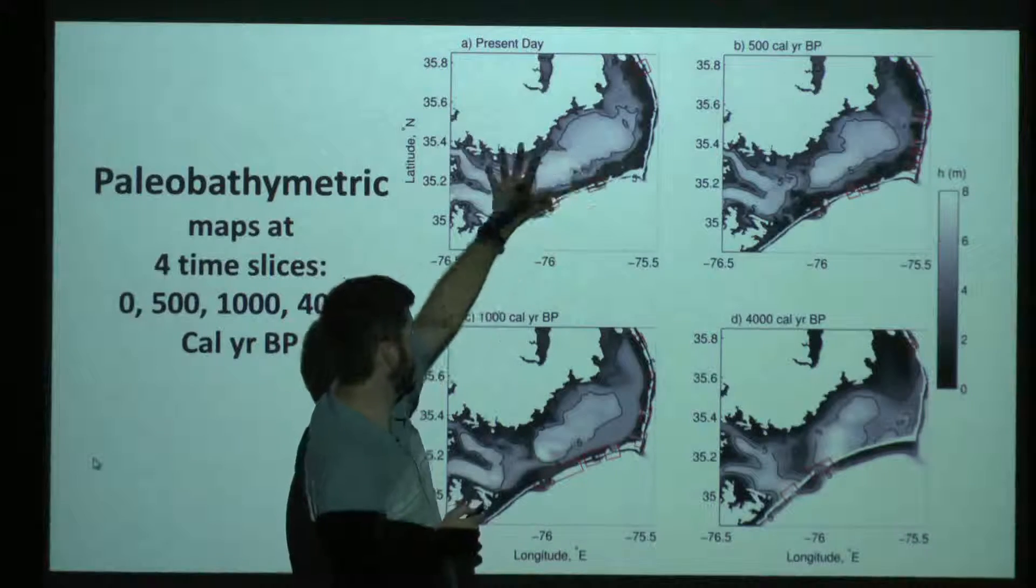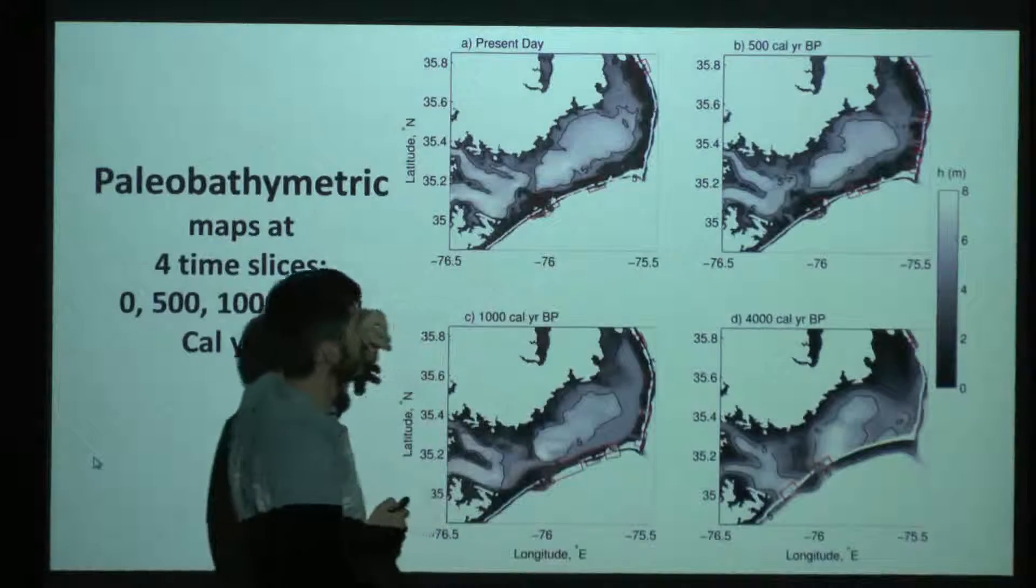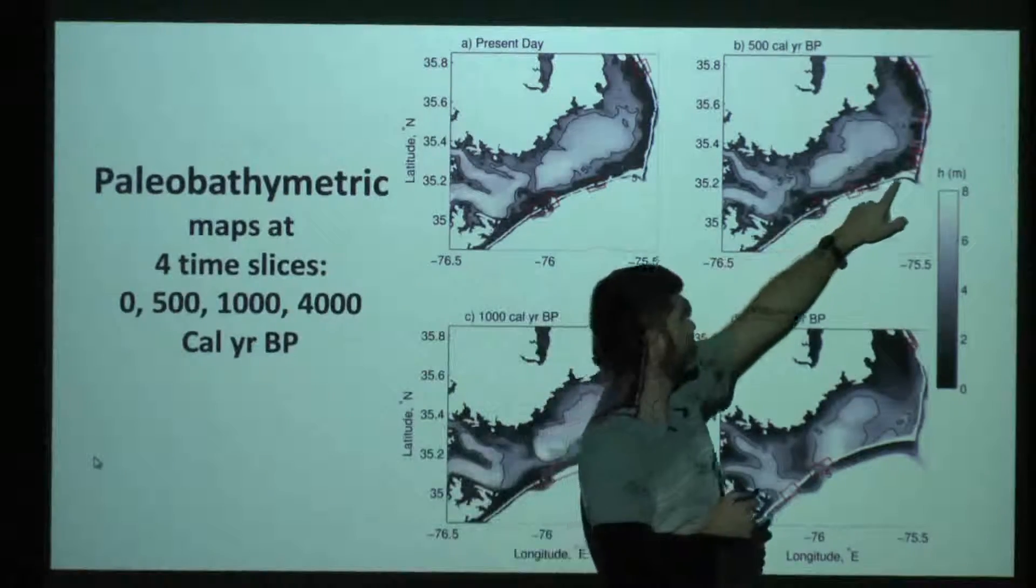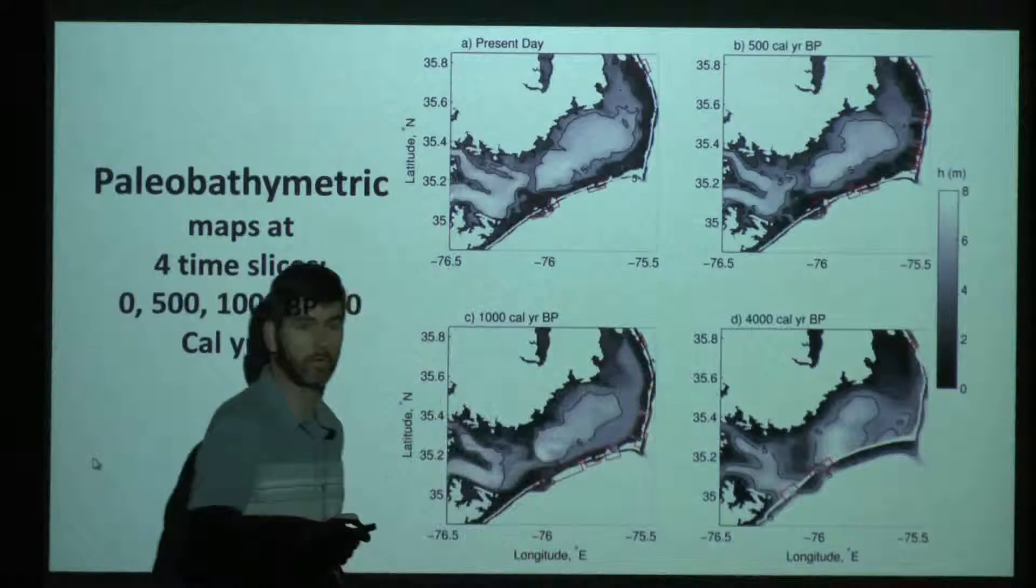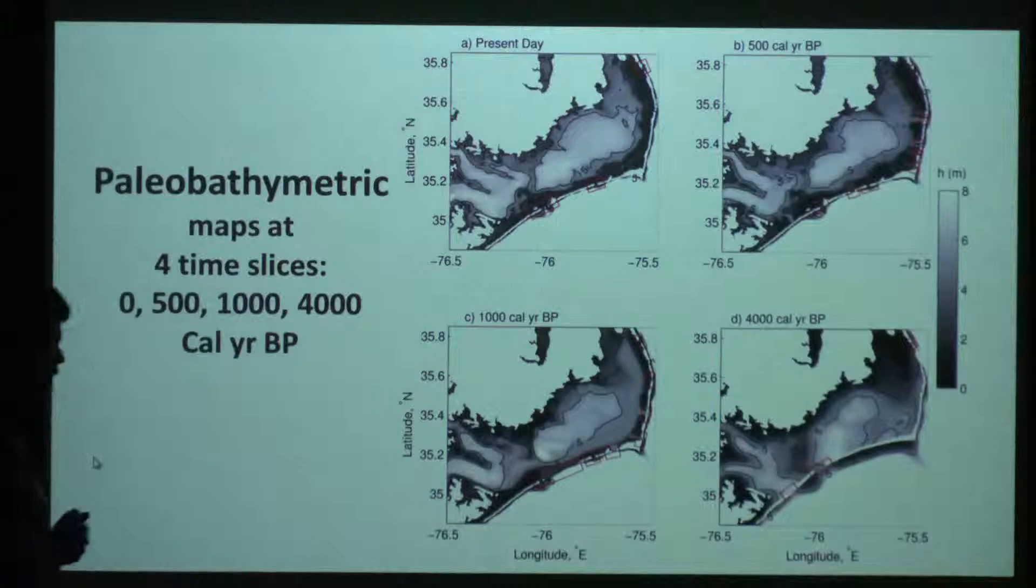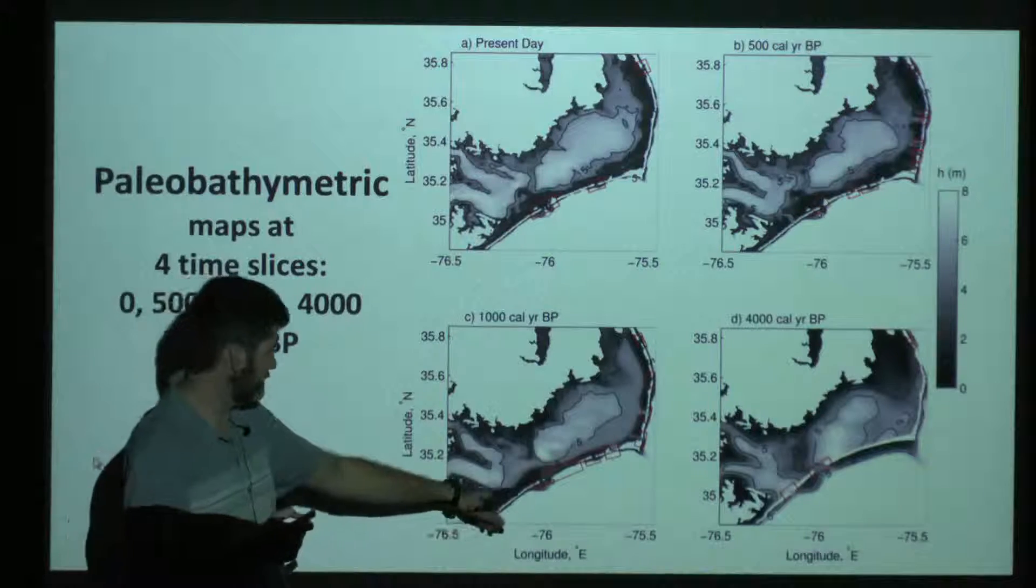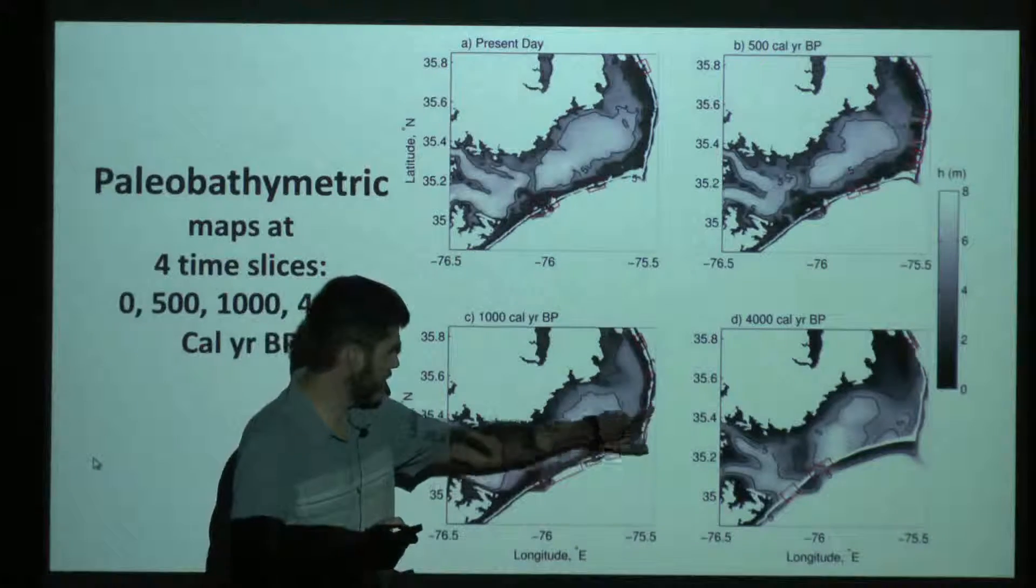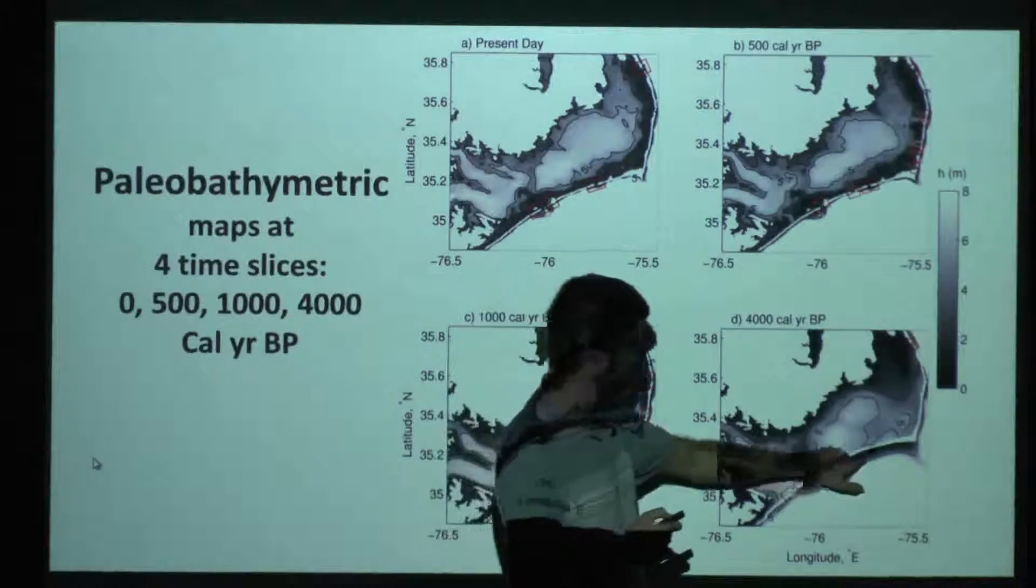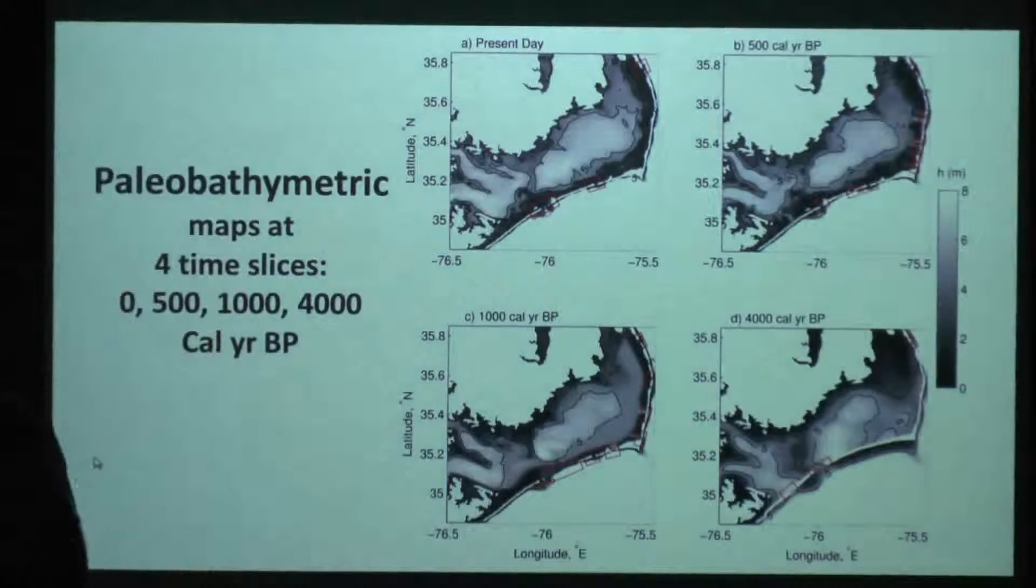In the present day scenario, so this is the grid for the present day, we have Ocracoke Inlet, Hatteras Inlet, and Oregon Inlet. But about 500 years ago, we had a whole bunch of little inlets, as evidenced by other cores taken over the islands. A thousand years ago, we very likely had a very wide inlet. Ocracoke Island itself was really not there, and a series of other inlets. Four thousand years ago, we didn't have these other inlets here. We had some other inlets farther south that were built. So very different scenarios.